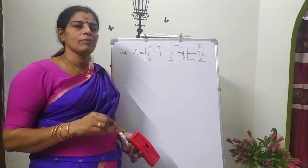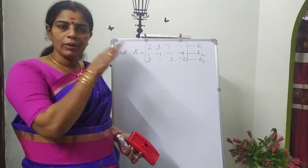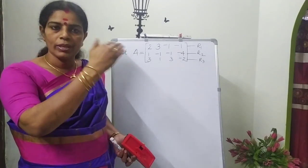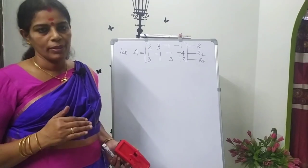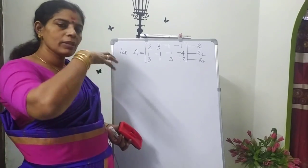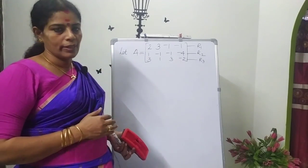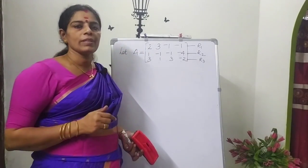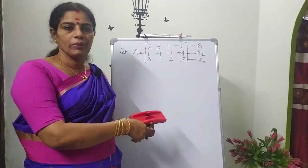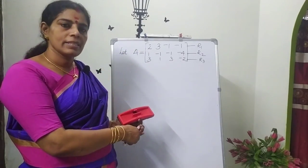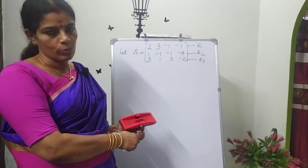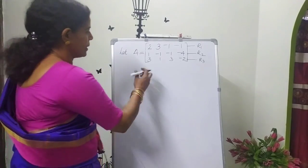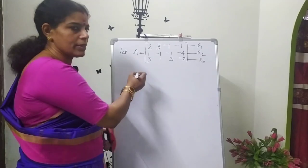First row, first element is one. We have to do a row exchange — a raw interchange. We can interchange the rows. I will apply that elementary transformation.